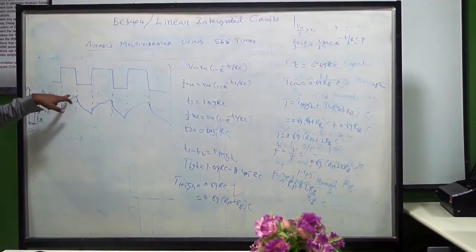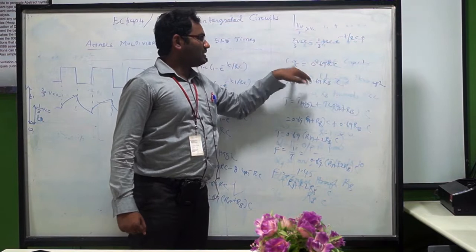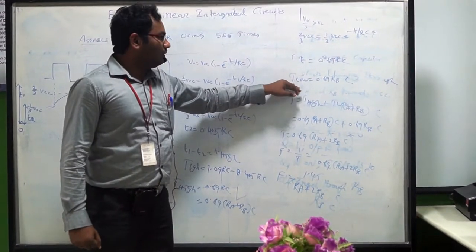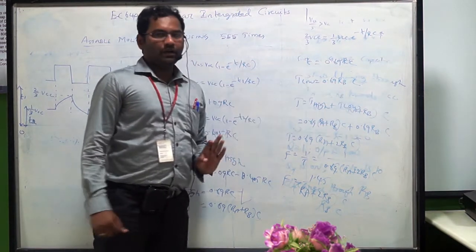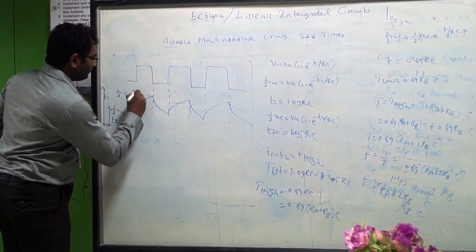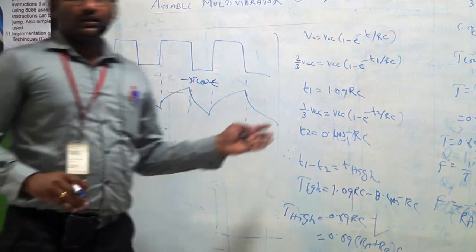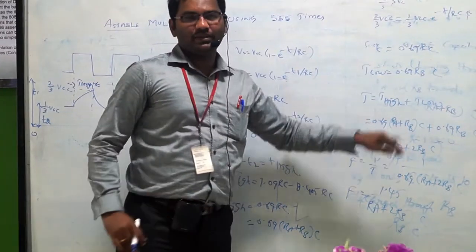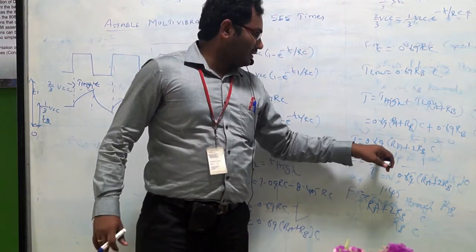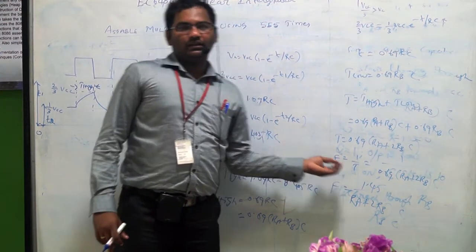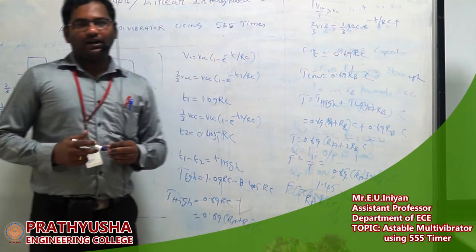Next, the capacitor discharges from 2/3 Vcc to 1/3 Vcc. So: 2/3 Vcc = 1/3 Vcc × e^(−T/RC), which gives T_low = 0.69 × RB × C, since the capacitor discharges through RB towards ground. The total time period T = T_high + T_low = 0.69 × (RA + RB) × C + 0.69 × RB × C = 0.69 × (RA + 2RB) × C. The frequency of the astable multivibrator is F = 1/T = 1.45 / ((RA + 2RB) × C).